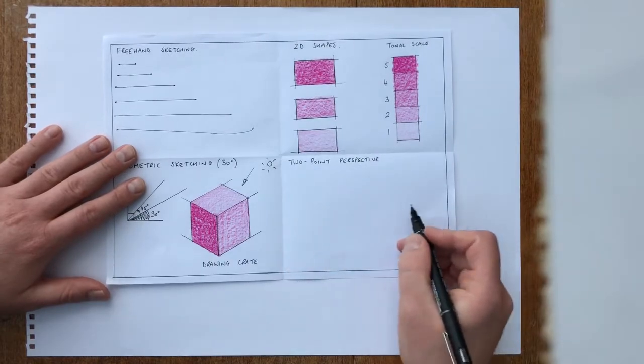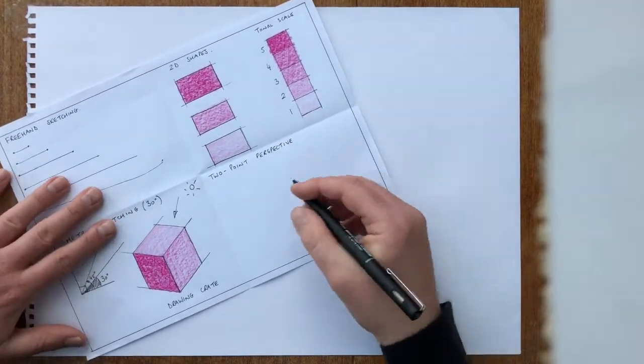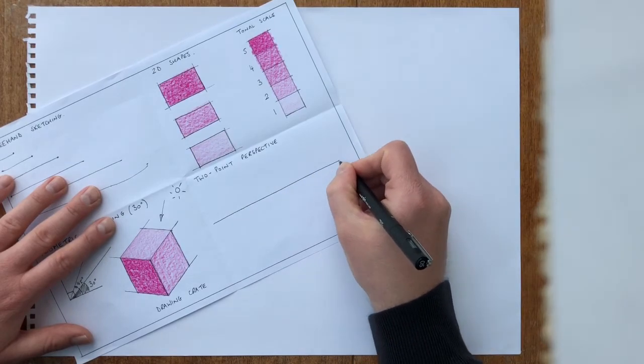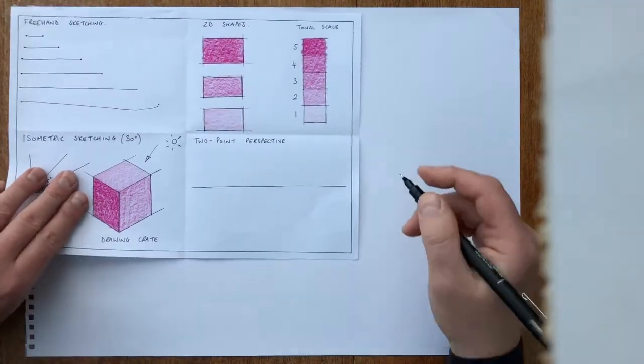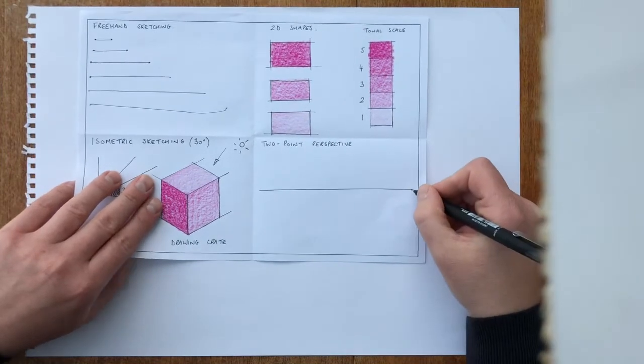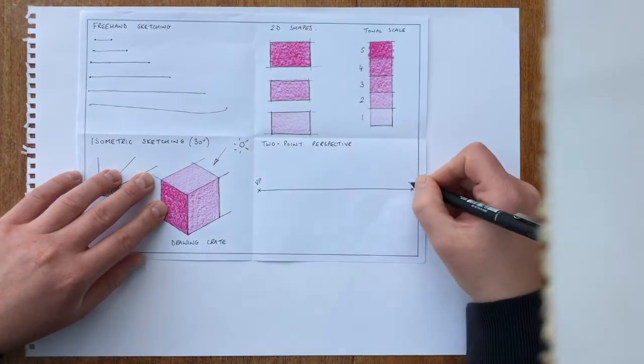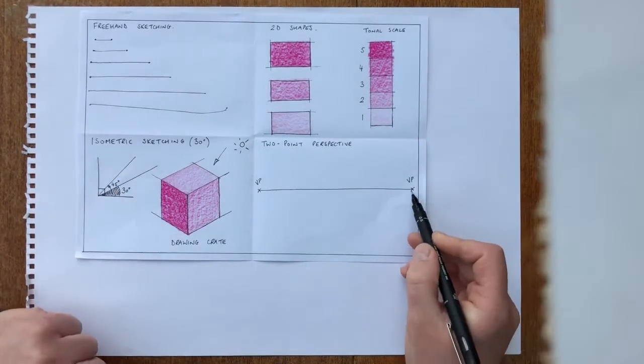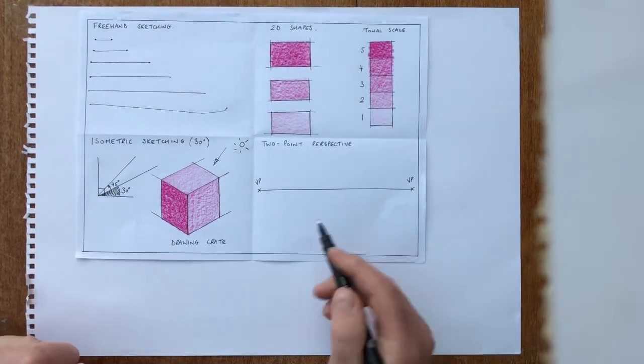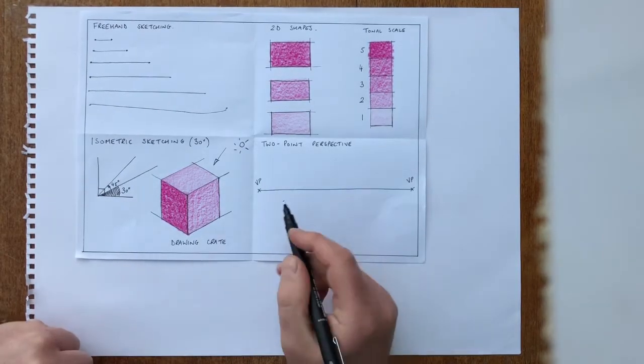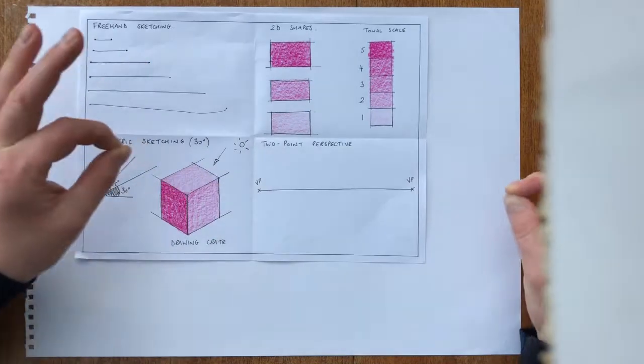First thing we need to do is draw a line through the centre to represent this. I'm going to turn my paper and draw a line through the centre of the box. It's horizontal. On that line, I'm going to add on two points. I'm going to put a cross at each end. These are going to be what's called vanishing points.